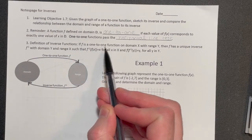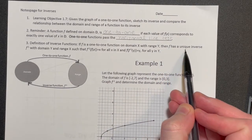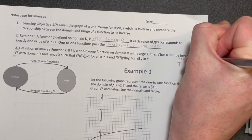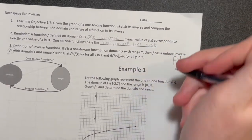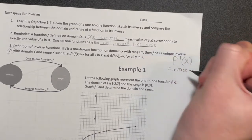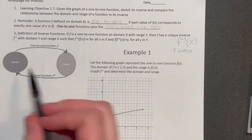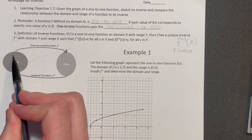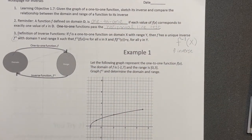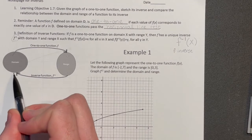Looking at the definition of an inverse function: if a function is 1-to-1 on a domain of x with a range of y, then that function will have a unique inverse. We write that inverse in this notation — it looks like f with a negative 1 exponent but it's just read as f-inverse of x. In an input-output situation, the domain inputs come into the function and map to a specific value in the range. An inverse function takes that back from the outputs and maps it back to the original input.